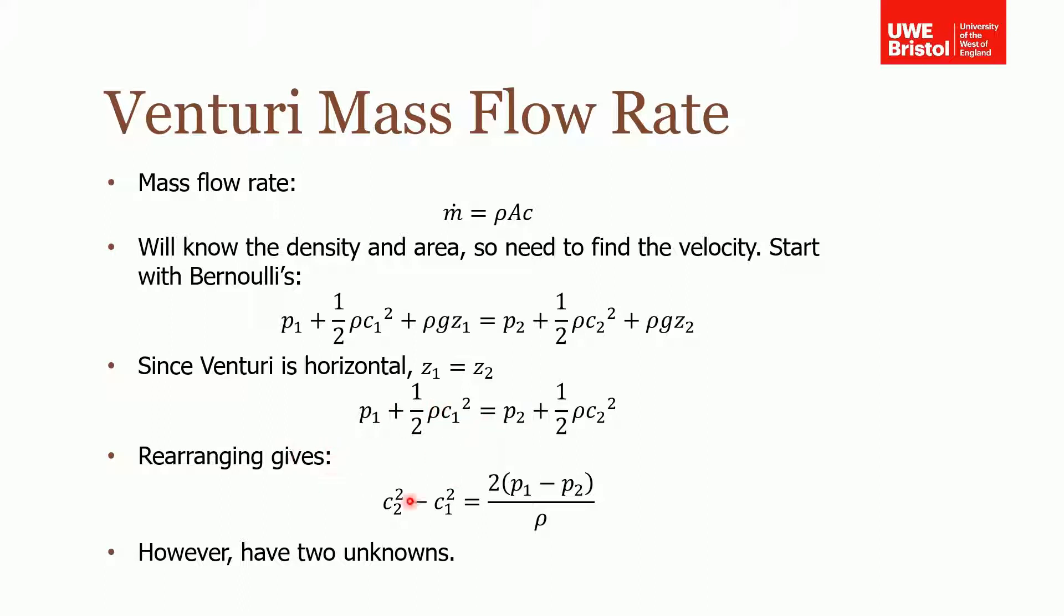Okay, now we're left with the static pressure and the dynamic pressure term. And if we rearrange this, because what we're trying to find remember is one of the velocities, we can write it so that c₂² minus c₁² is this function of Δp. And remember that from the previous slide we derived an expression for the change in pressure based on the values of the manometer, so we can put this in. However, we've got two unknowns. We don't know what c₂ is or c₁ is, so we can't yet solve this, even if we knew what the Δp is.